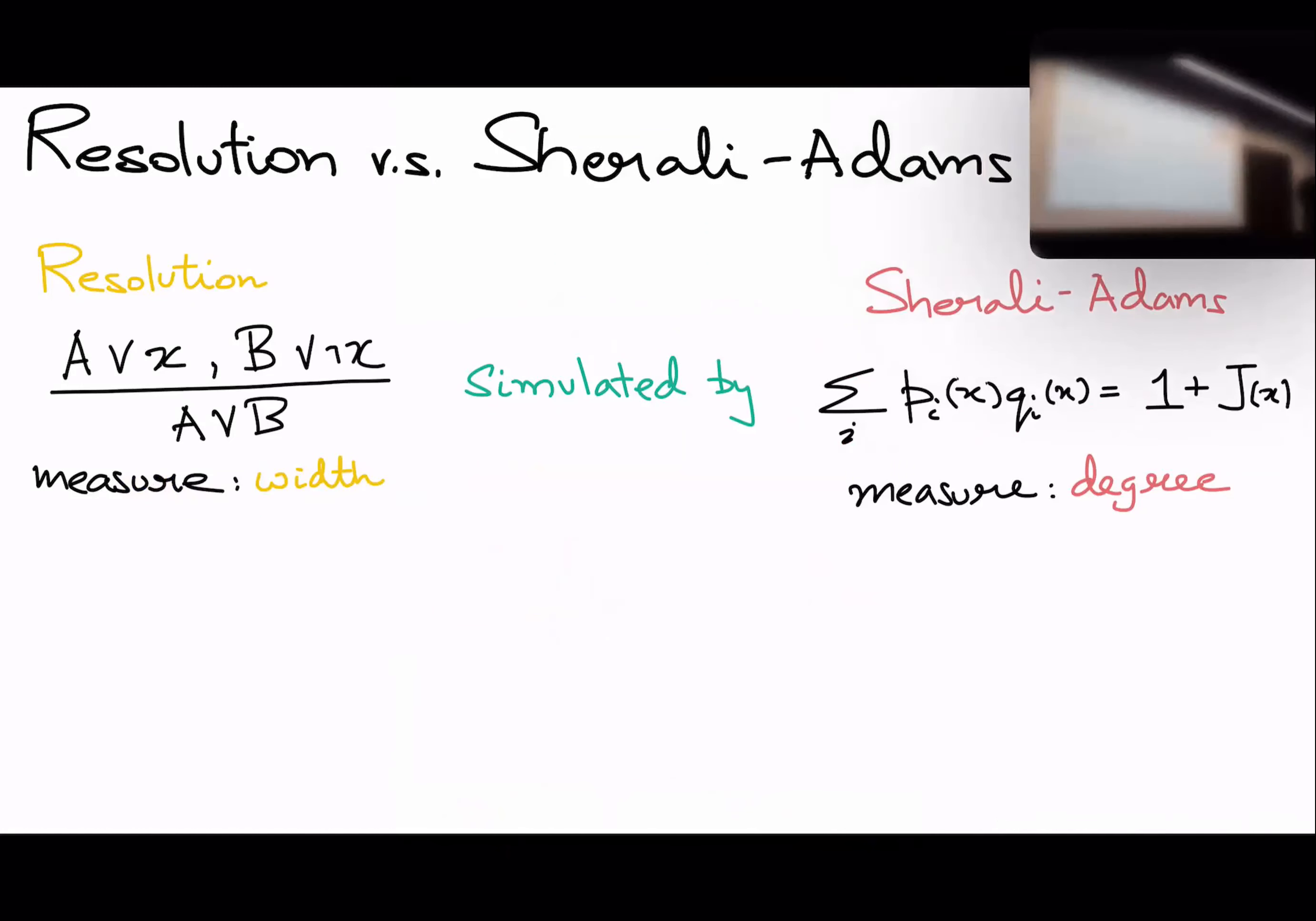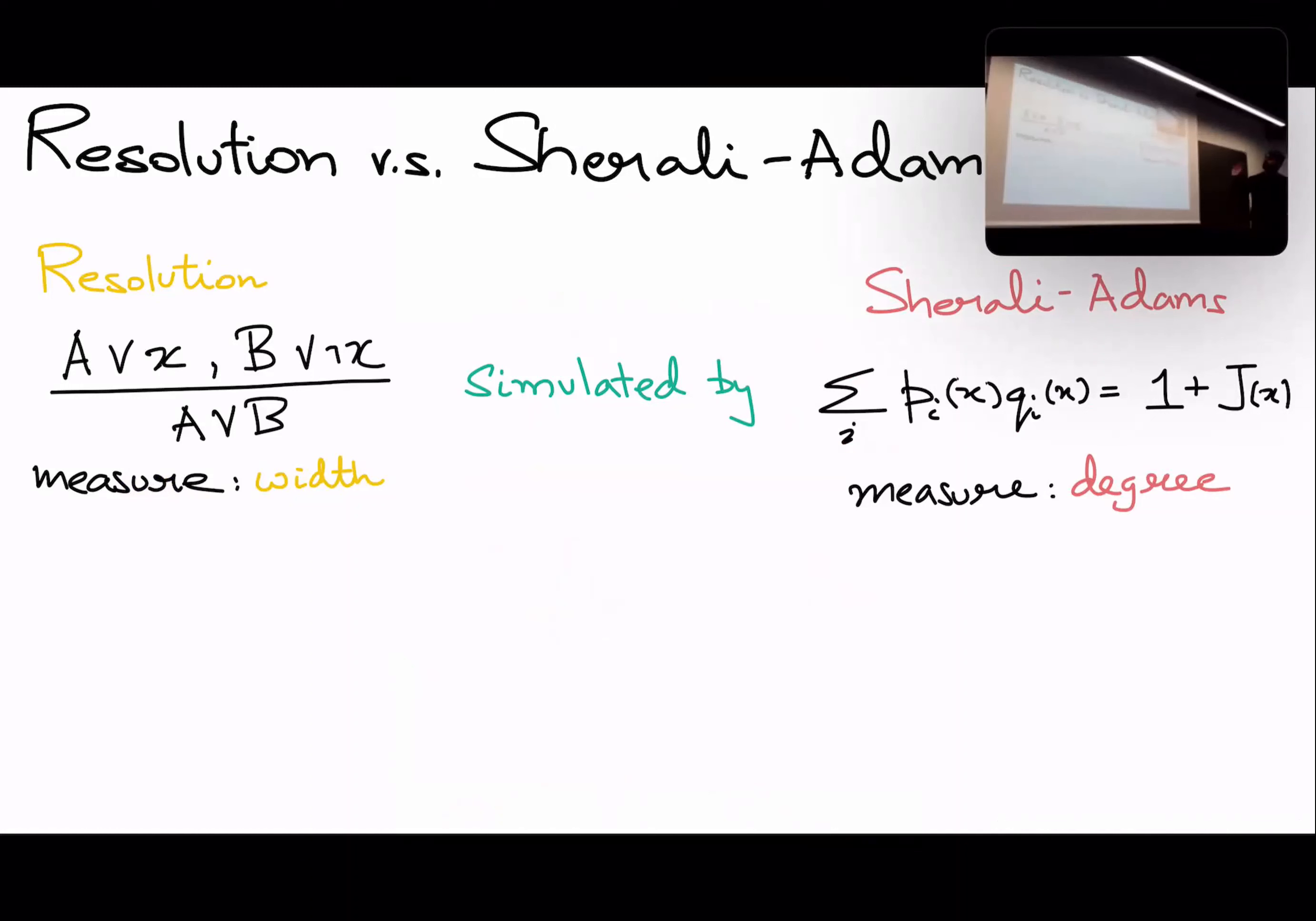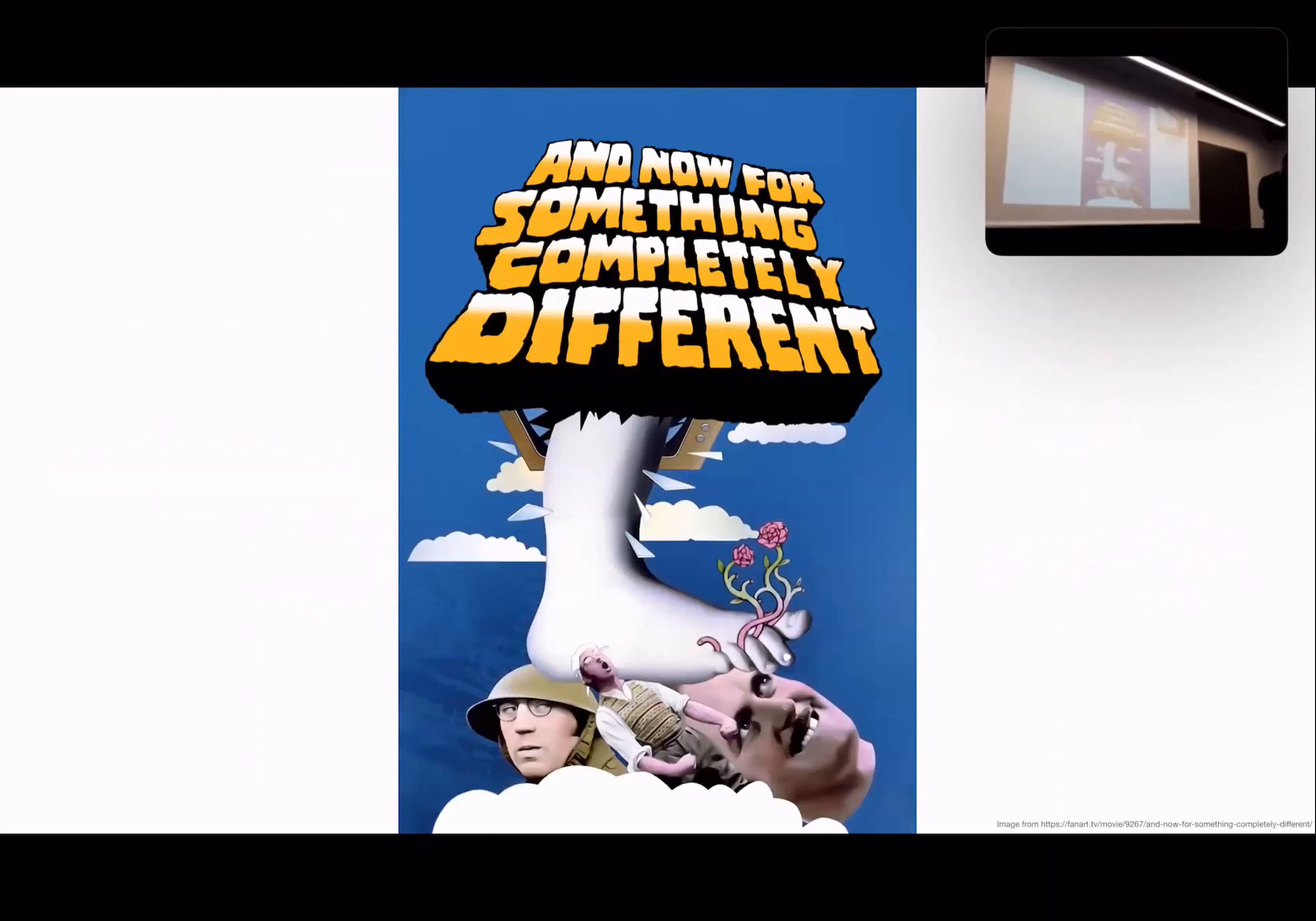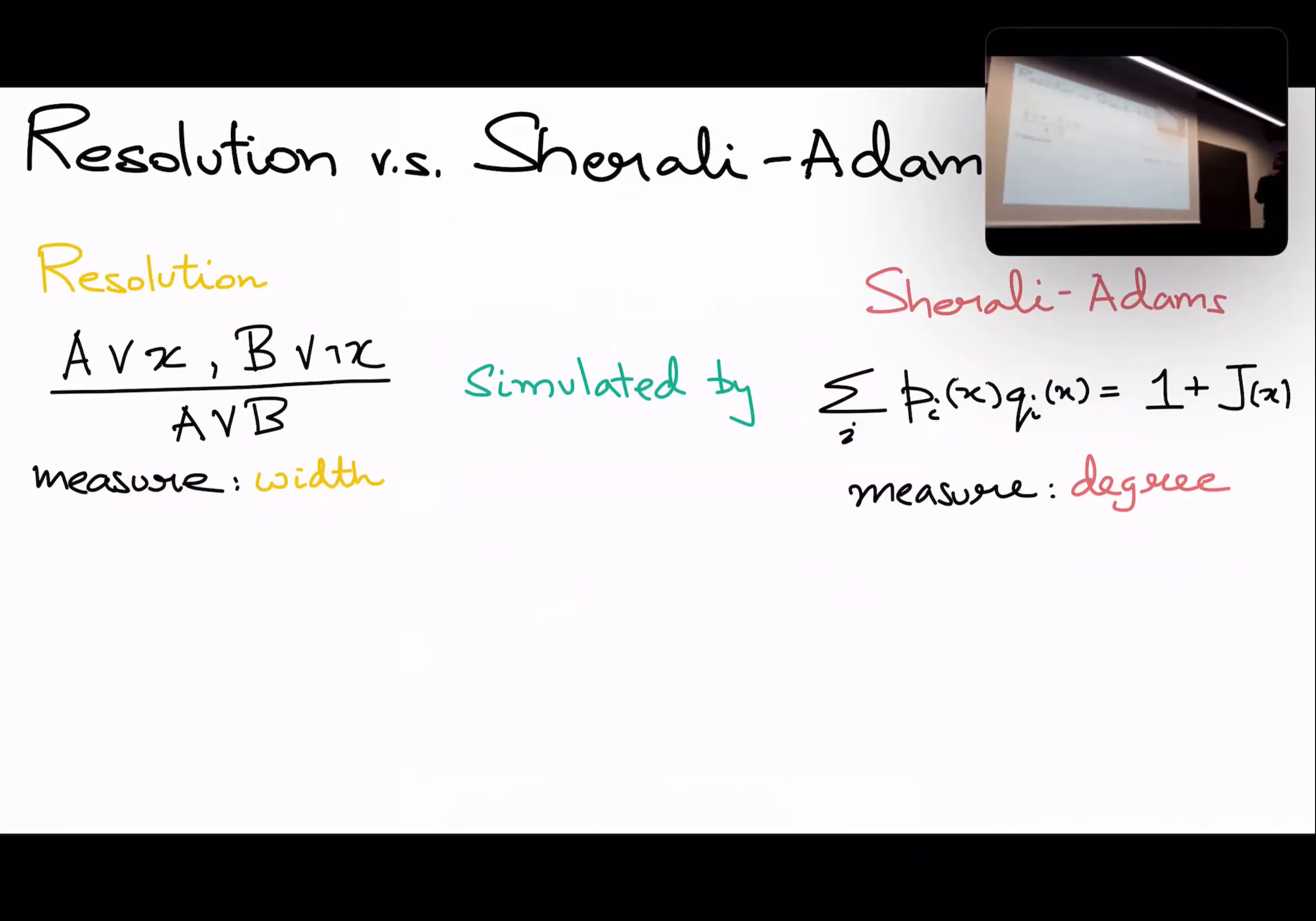So now that we talk about proof complexity. So it's well known that the proof system resolution, which I'm sure is familiar to this audience, is simulated by Sherali-Adams. There was a question actually, do we know that UEOPL is different from FP? Good question. Yes, we know that because we can prove a query lower bound. So, black box separate.